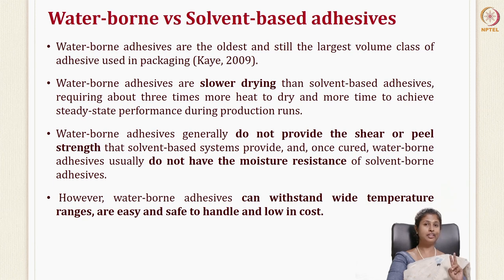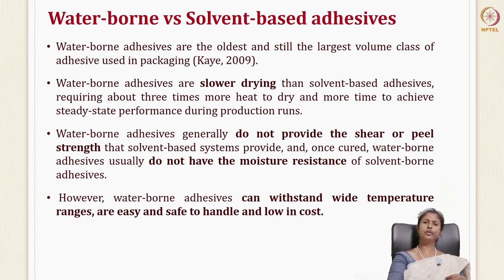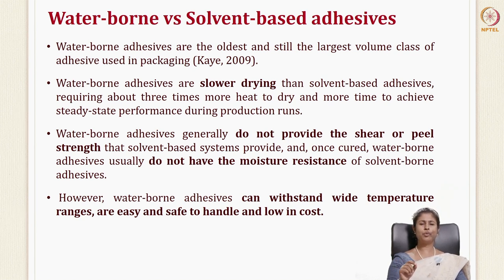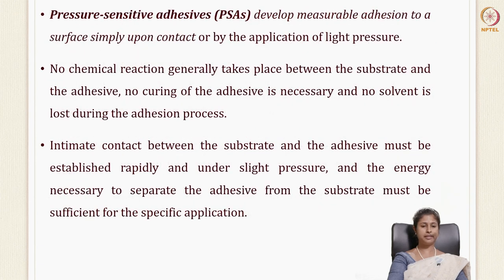Now we'll talk about two types of adhesives: waterborne and solvent-based. Waterborne adhesives are the oldest and still the largest class of adhesives used. They are slow drying compared to solvent-based, requiring three times more heat and more time to dry completely. They generally do not provide the shear or peel strength of solvent-based adhesives and lack moisture resistance once dry. However, they can withstand high temperature ranges, are easy and safe to handle, and are of low cost.